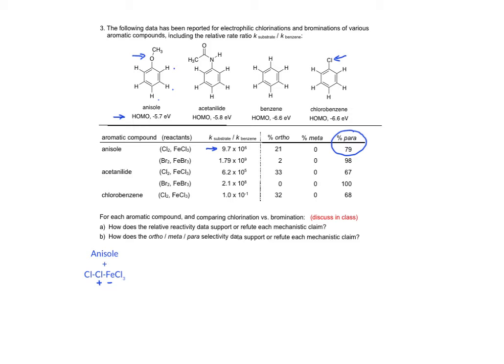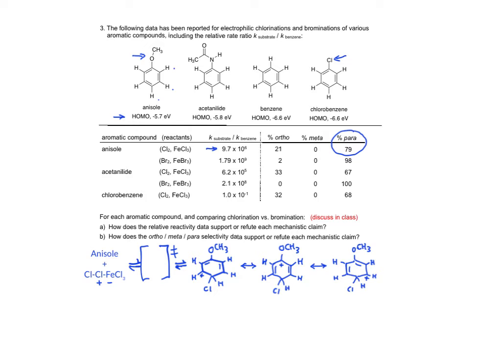Claim 1 to give para-chloroanazole will pass over a transition state to give the carbocation with positive charge resonance delocalized onto three of the carbons, including the carbon bearing an oxygen with a non-bonded pair of electrons. It is the transition state energy that's really important, but since the intermediate is close to the transition state in energy, we'll look at the intermediate and extrapolate back to the transition state from that point.